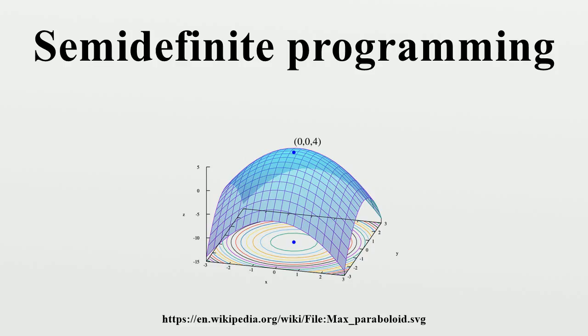a general semidefinite programming problem can be defined as any mathematical programming problem of the form. Equivalent formulations: a matrix is said to be positive semidefinite if it is the Gramian matrix of some vectors. If this is the case, we denote this.